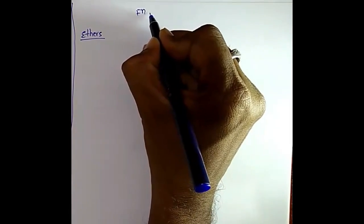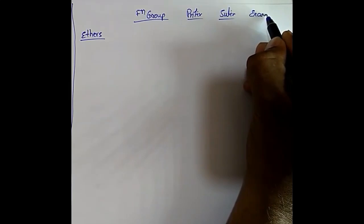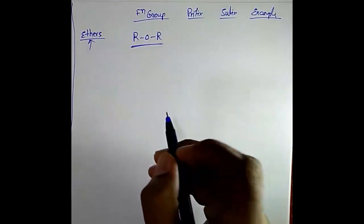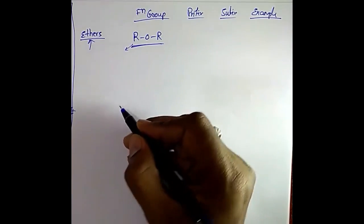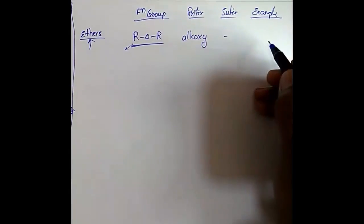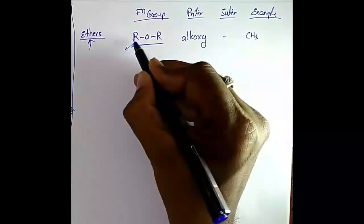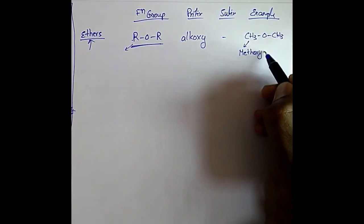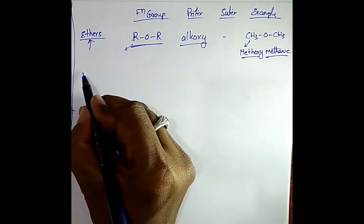Now let's look at functional groups with their prefix, suffix, and examples. For ethers, the functional group is R–O–R, where R can be any carbon-hydrogen compound like CH3, C2H6, etc. The prefix for ethers is 'alkoxy' and there is no suffix. For example, CH3–O–CH3 is called methoxymethane.